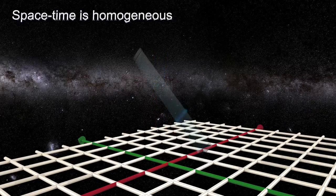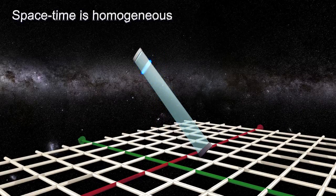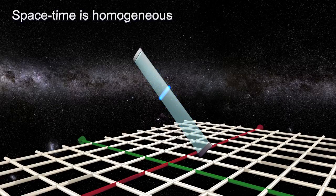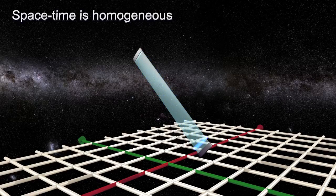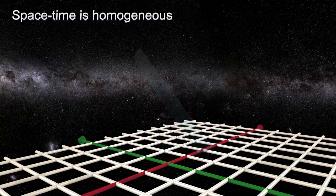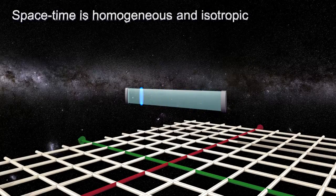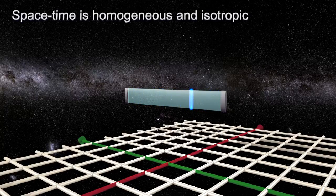If we give the light clock different orientations, we can check that it still keeps time at the same rate. This means that space time is isotropic. It has the same properties in every direction.